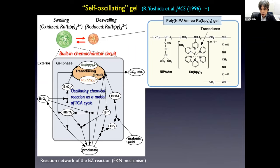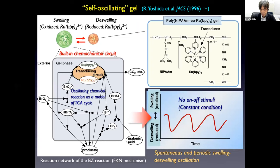The redox oscillation of the ruthenium catalyst occurs autonomously. If the catalyst is in the oxidized state, the polymer chain becomes hydrophilic. If the catalyst is in the reduced state, the polymer networks become hydrophobic. The polymer phase transition temperature shifts to a higher temperature at the oxidized state. As a result, at the oxidized state the gel swells, and at the reduced state the gel deswell. With the autonomous redox changes, the gels show spontaneous periodic swelling and deswelling oscillation under constant conditions.